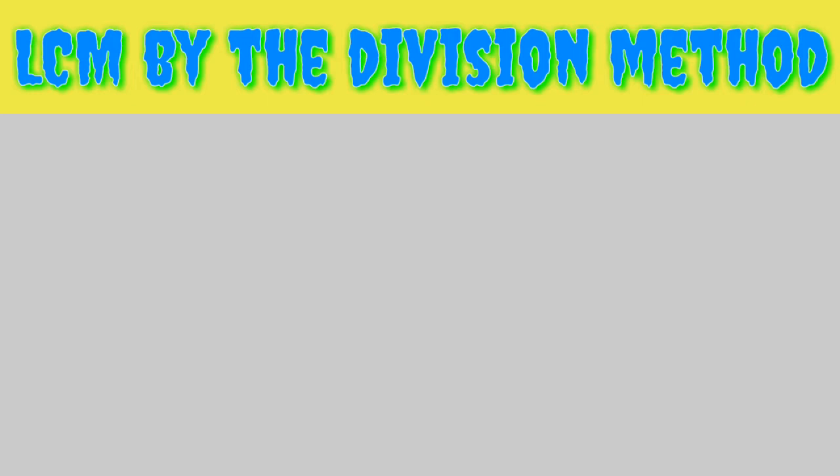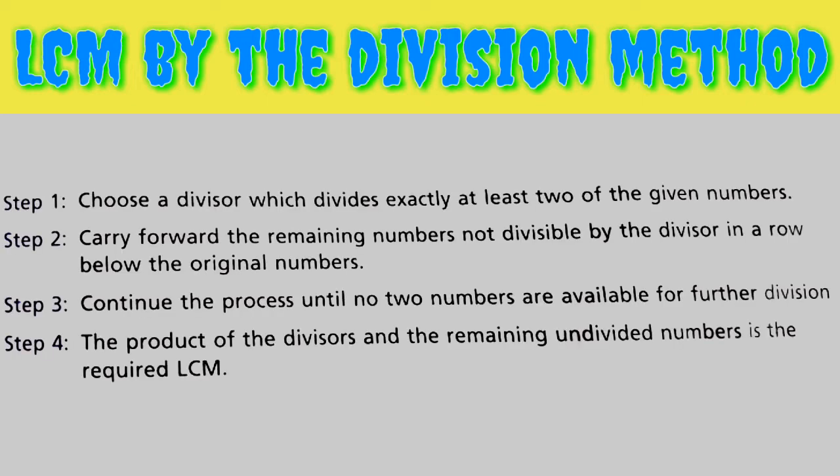So a simpler method known as the Division Method is used. Step 1: Choose a divisor which divides exactly at least two of the given numbers. Step 2: Carry forward the remaining numbers not divisible by the divisor in a row below the original numbers.